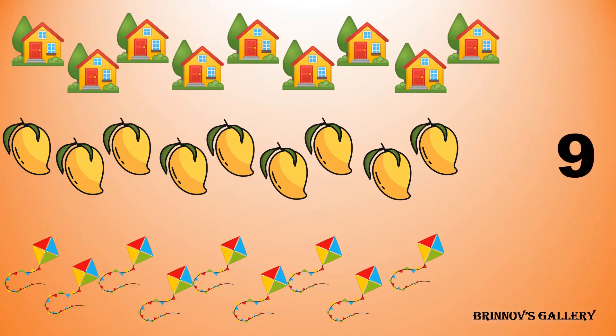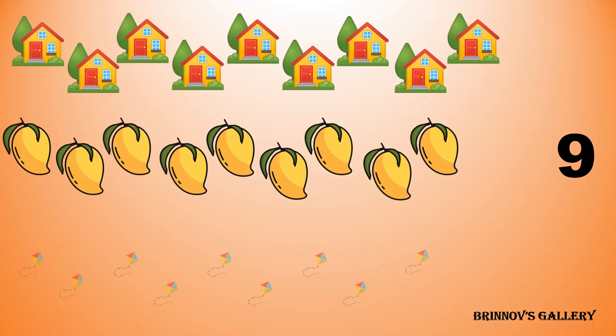9. 1, 2, 3, 4, 5, 6, 7, 8, 9. 9 houses, 9 mangoes, 9 kites.